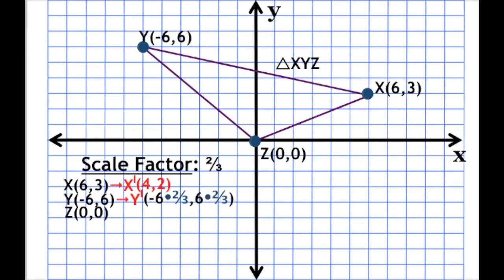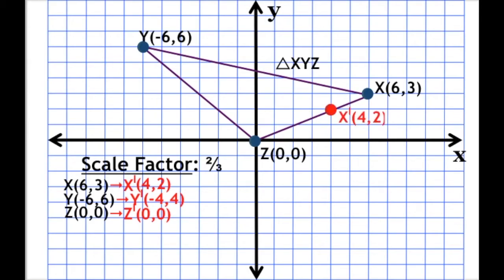Y prime is going to be negative 6 times two thirds and positive 6 times two thirds. Negative 6 times two thirds is negative 4, and 6 times two thirds is positive 4, so Y prime is at (-4, 4). Z is going to be simple — Z prime is basically 0 times two thirds, so that's just 0. Our Z prime is going to be at the same location as point Z. The last thing is to plot our points to get triangle X prime, Y prime, Z prime, connect them, and that's our new triangle.